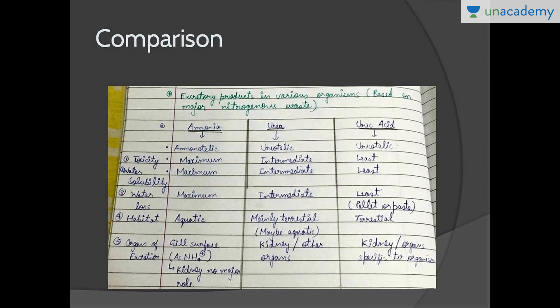Let's start with a brief comparison of the three types. Ammonotelic organisms are all organisms that have plenty of water around them — they have an abundance of water. Because the excretion of ammonia requires a lot of water, they need to be in a water-rich environment where water conservation is not a concern. Of all three waste materials, ammonia is the most toxic. The organ of excretion is basically the gill, and ammonia is removed as ammonium ions.